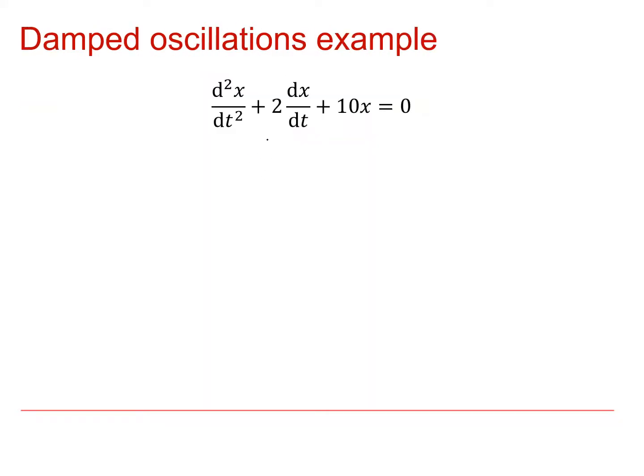So if we have a look at this differential equation that represents damped oscillation, this extra term in the middle here comes about as the result of some kind of resistance to the motion related to the velocity. And that explains why it slows down over time.